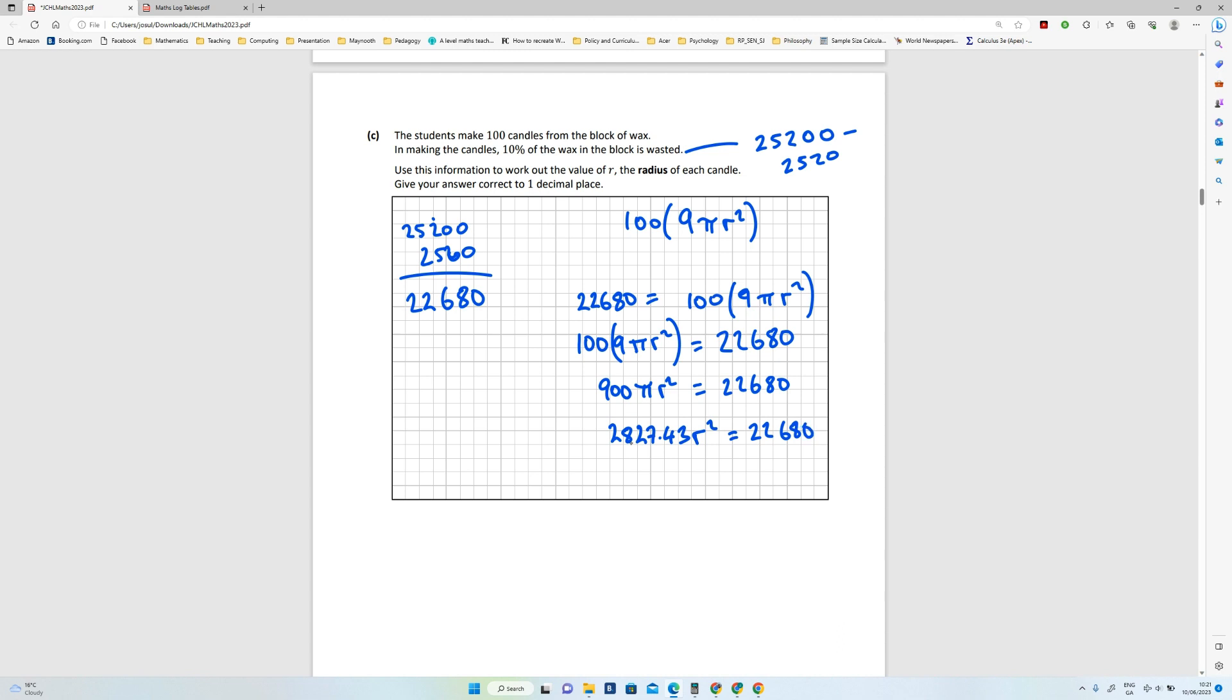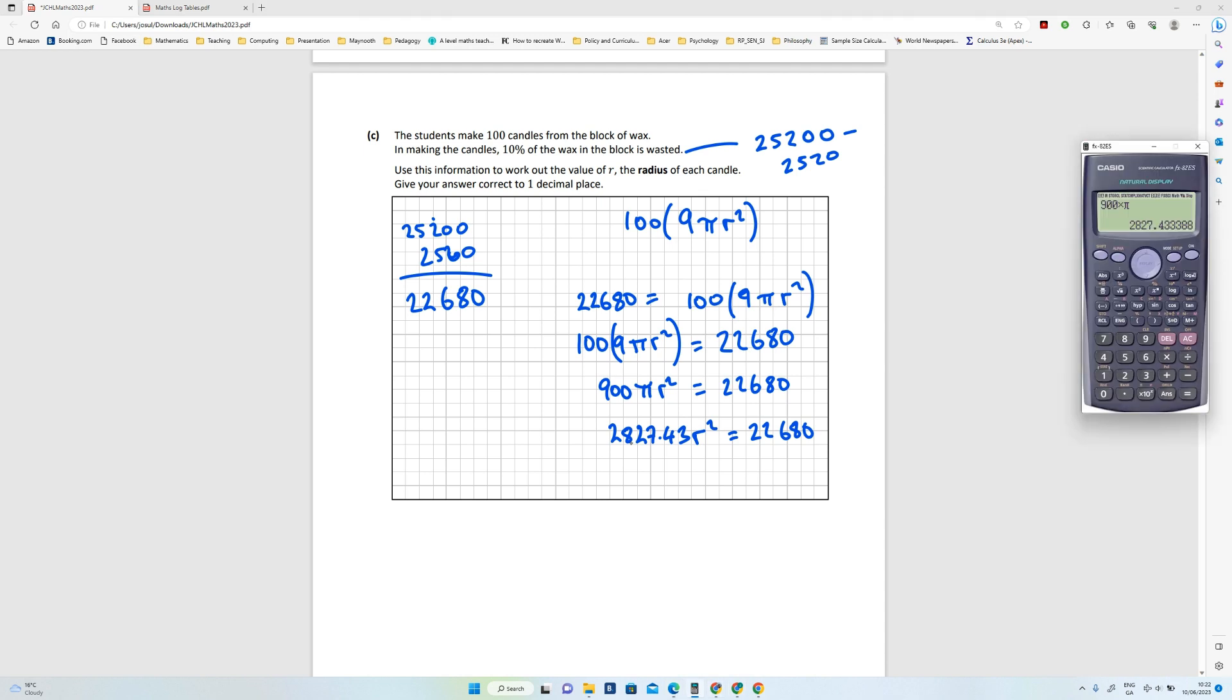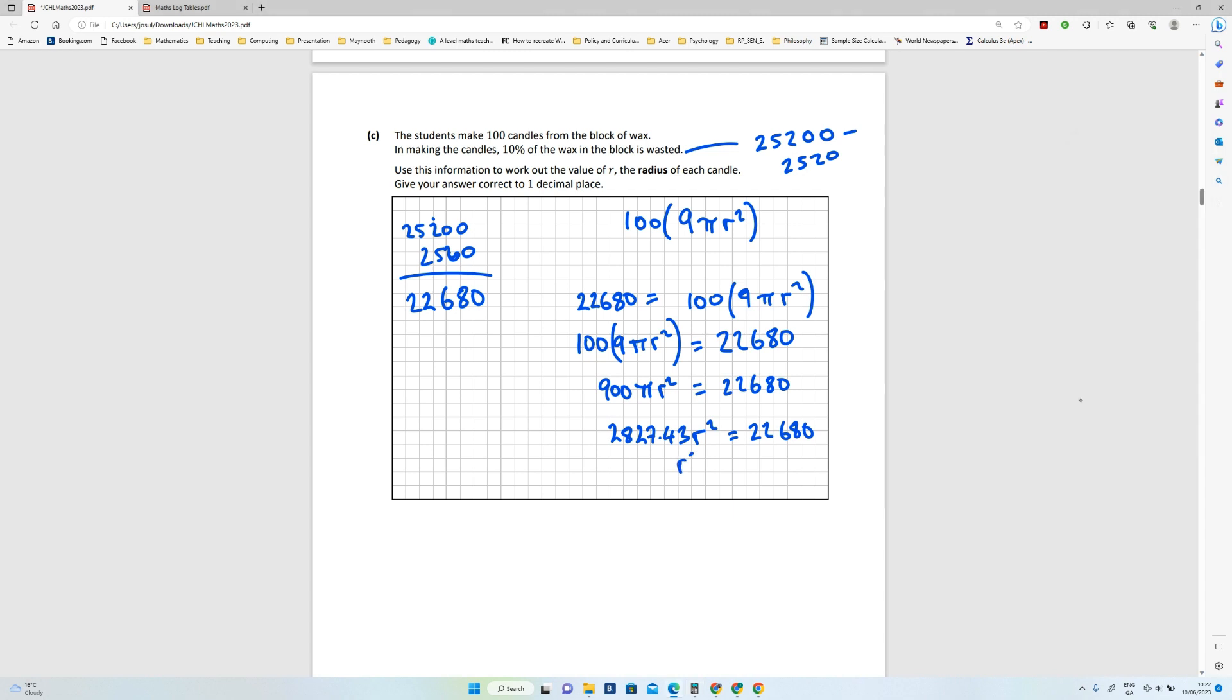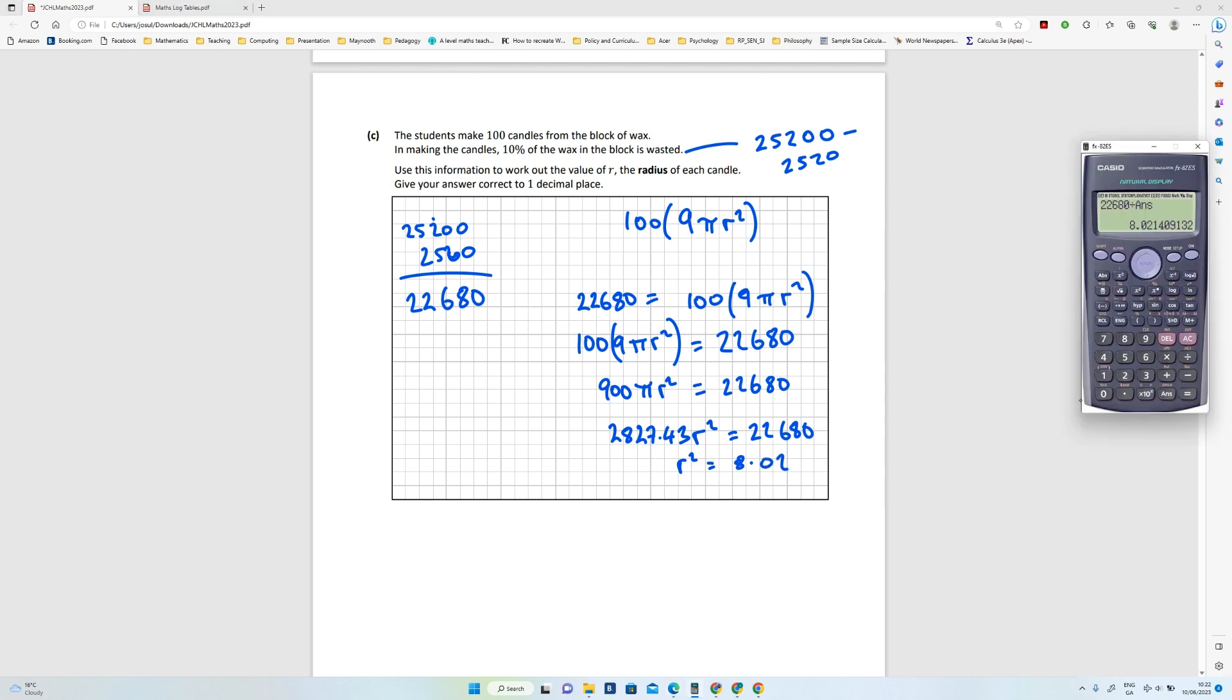Now I need to get r² by itself, so I'm going to divide that number. So I'm going to divide this number by that number, so 22680 divided by my answer which is 2827. Okay, so I get 8, so r² equals 8.0214.